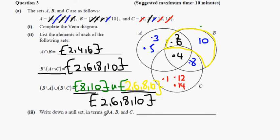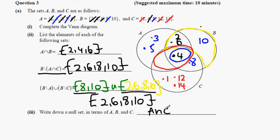Write down the null set in terms of A, B and C. The null set means this set is completely empty. It's A intersection C — everything in A intersection C is this region — but we want to exclude the number 4. You can say everything in A intersection C that's not in B, where this line means 'not in B'.